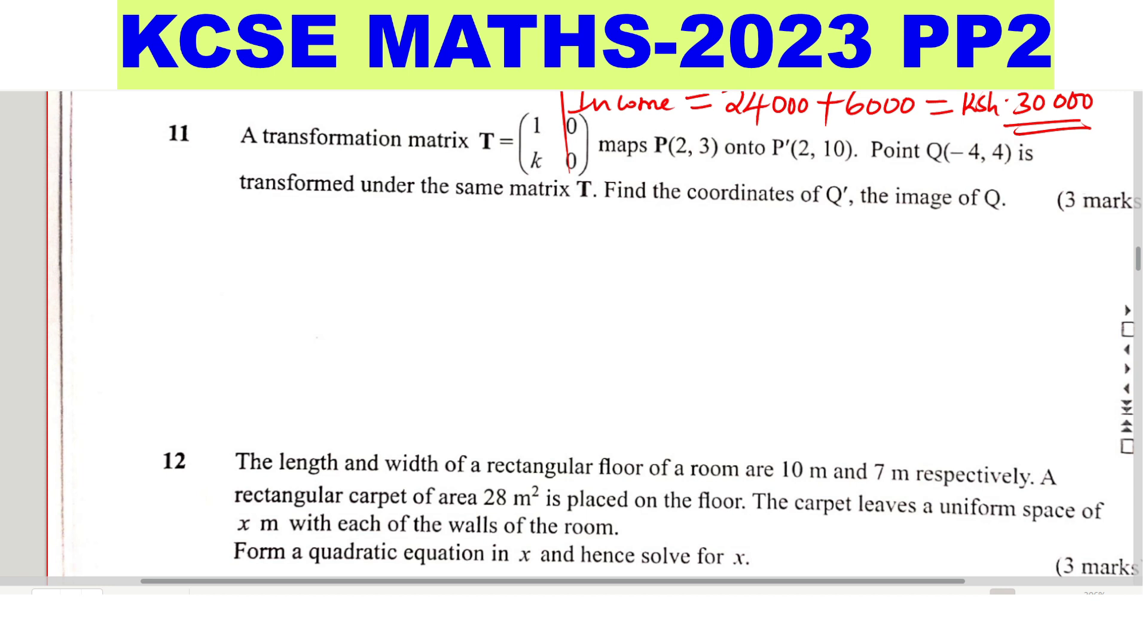Matrix T is 1K00. So this one transforms P, and P is, write it as a column, in column form, you get 2, 3, like that. And this one should give P' and P' which is 2, 10.